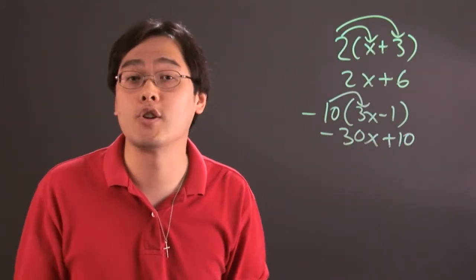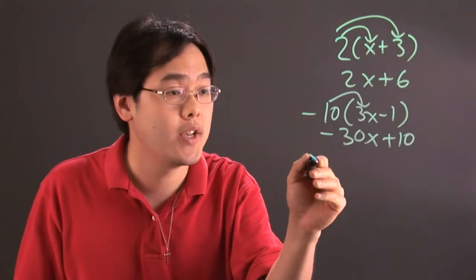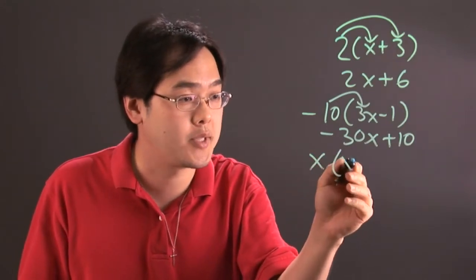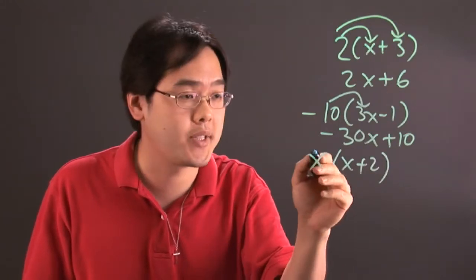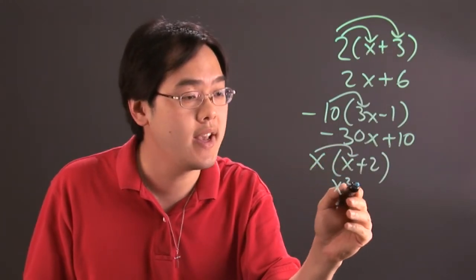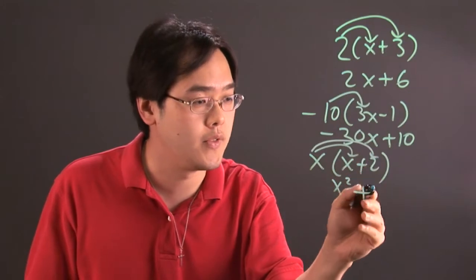And sometimes you may have a factor of a variable like a factor of x. So if x times x plus 2, again you're multiplying by x. So x times x is x squared and x times 2 is going to give you 2x.